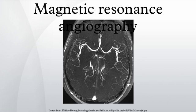MRA is often used to evaluate the arteries of the neck and brain, the thoracic and abdominal aorta, the renal arteries, and the legs.